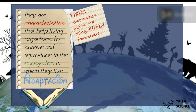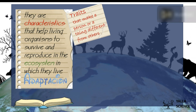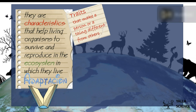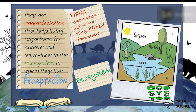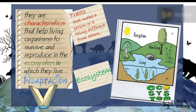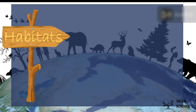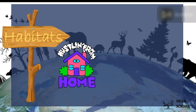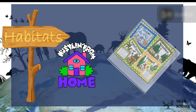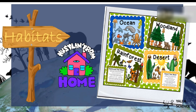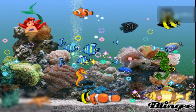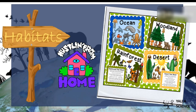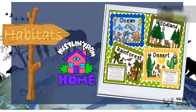These traits help living organisms to survive and reproduce in their ecosystem. An ecosystem is the area — the place, the space — like the ocean, which is the habitat for sea creatures.